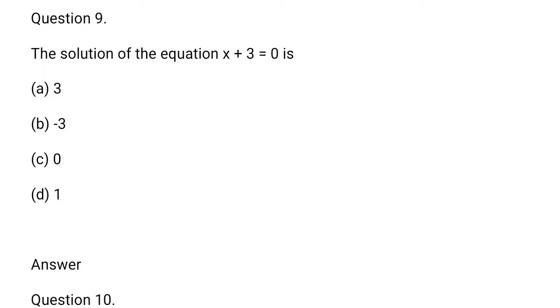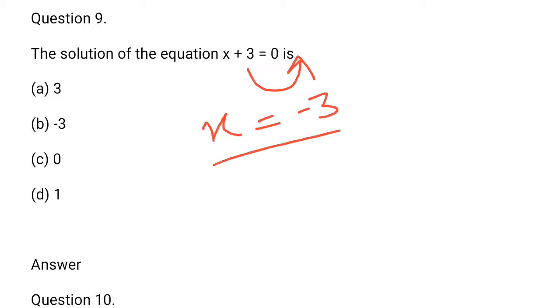The solution of the equation x plus 3 is equal to 0. So, transposing 3 to the right hand side gives minus. So, x is equal to minus 3. This is the answer, b option is correct.